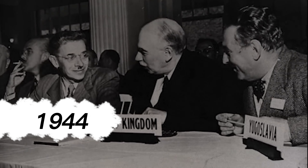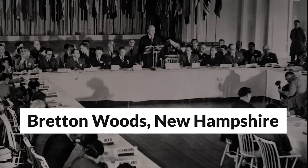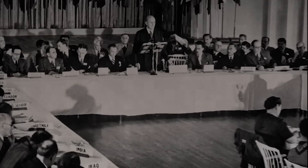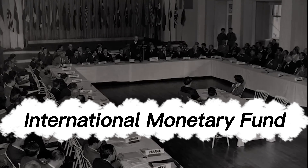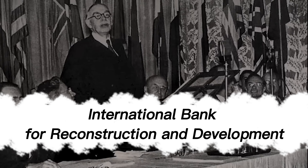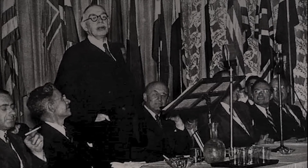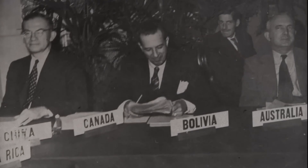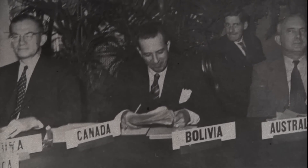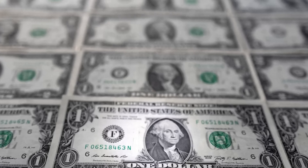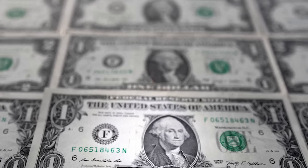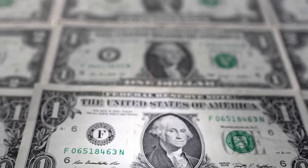In 1944, representatives from 44 countries met in the city of Bretton Woods, in the United States, to discuss the creation of an international monetary system that could promote economic stability. The participants agreed to create the International Monetary Fund and the International Bank for Reconstruction and Development, known as the World Bank. They also established the fixed exchange rate system, with the US dollar as the reference currency. The Bretton Woods monetary system lasted until 1971, when the United States abandoned the convertibility of the dollar into gold, due to growing inflationary pressure and trade deficits. This led to a series of agreements between IMF member countries to adjust their exchange rates in relation to the dollar and avoid excessive fluctuations.